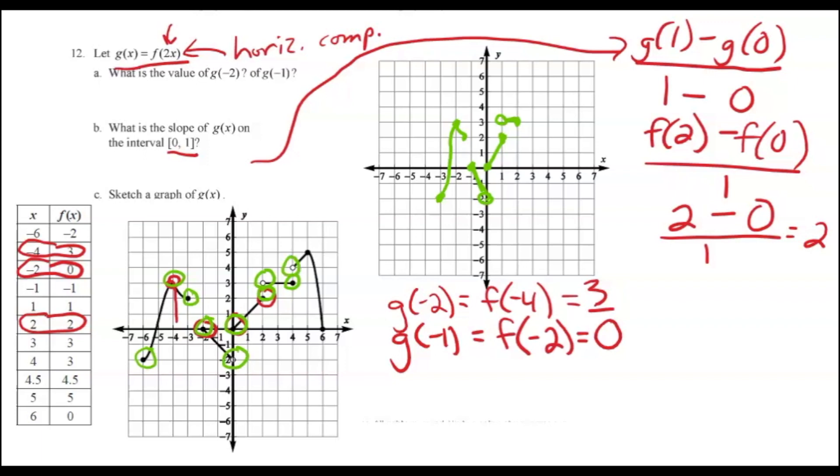Then we have the hole at 4, 4, which means we have a hole at 2, 4 for G. We have a point at 2, 5, which will be 2 and a half, 5. So the next little piece of the graph looks like this. And then finally we have 6, 0, which becomes 3, 0. So this has got to come down pretty quickly. Let me redo that. So that's what that graph ends up looking like.